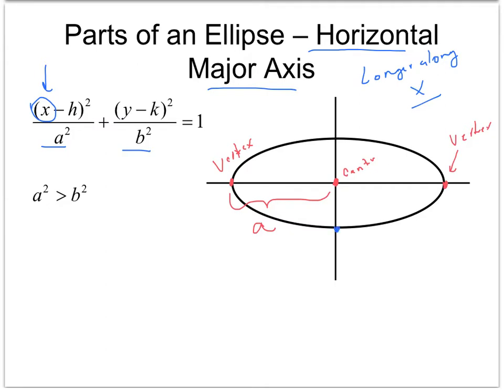This right here and this right here, these blue dots are the co-vertices or co-vertex. And the distance from here to here is B.